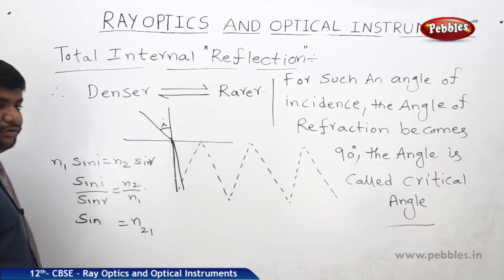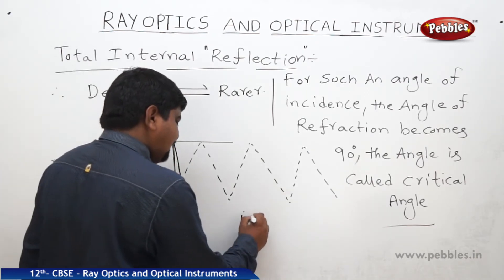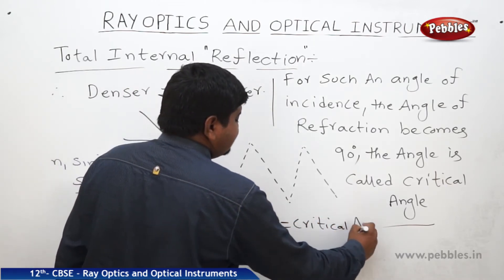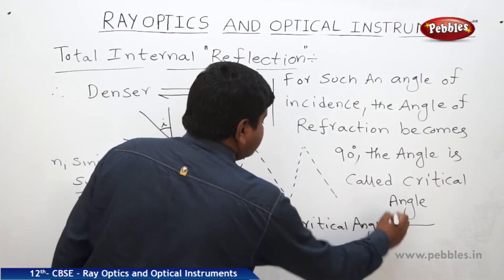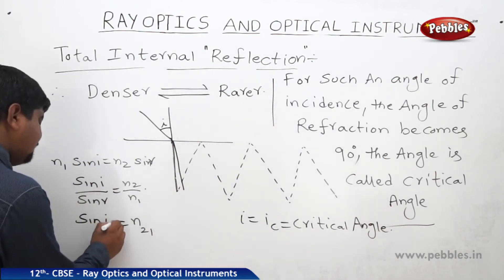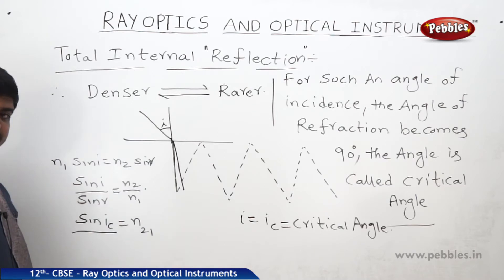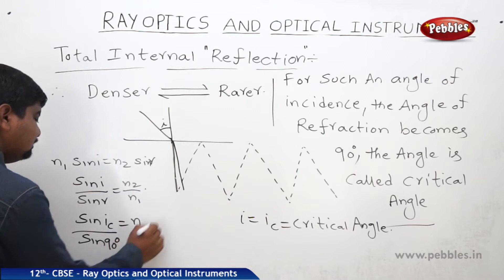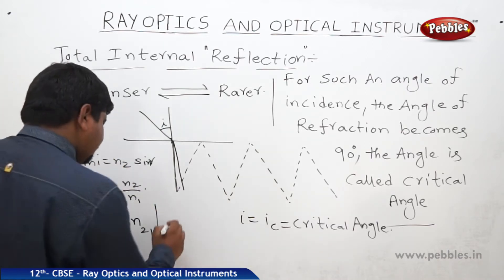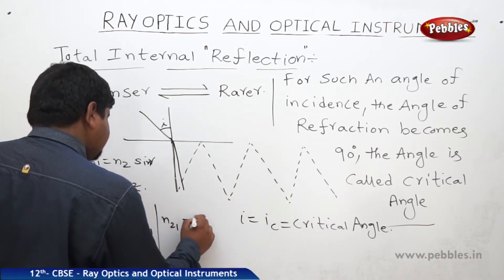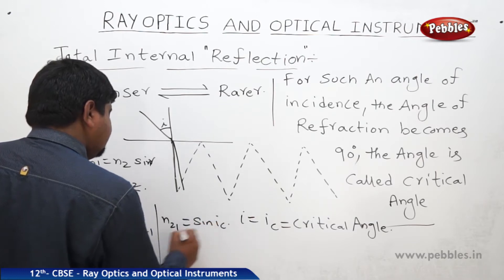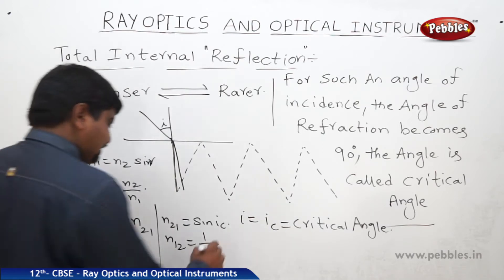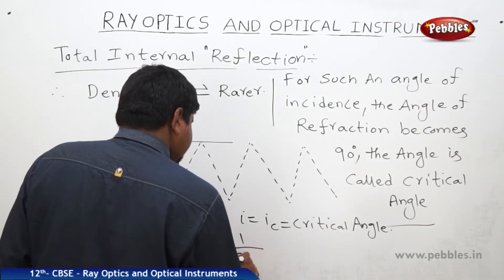If i becomes ic — the critical angle of incidence — then sin r becomes sin 90. We know that sin 90 is 1. Therefore, N21 = sin ic. And N12 = 1/N21, which is 1/sin ic.